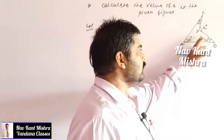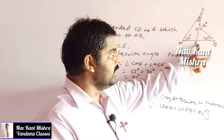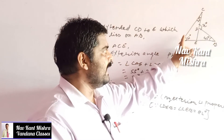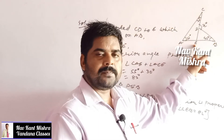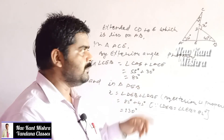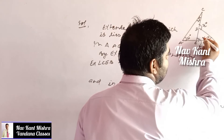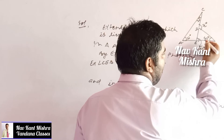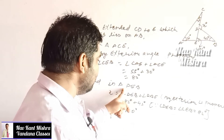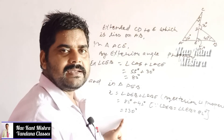In this question, you need to calculate the value of x. Extend CD up to point E, where E lies on AB. This forms triangle ACE. Applying the exterior angle property in triangle ACE gives angle CEB = 85°. Then x is the exterior angle of triangle DBE. Applying the exterior angle property in triangle DBE gives x = 130°.